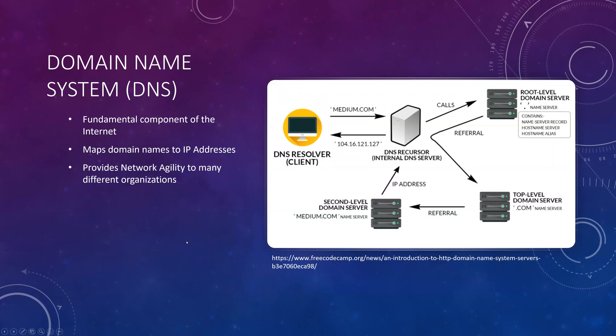The domain name system — I'm not going to spend a lot of time on this because some of our other papers have already covered how the DNS system works. It is a fundamental component of the internet. Its basic function is to map domain names to IP addresses and it provides network agility to many different organizations. A lot of the IP addresses are hidden behind URLs and domain names, and it's the DNS server that actually resolves all of that.